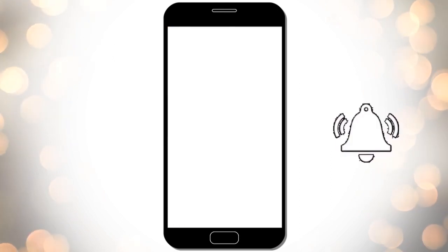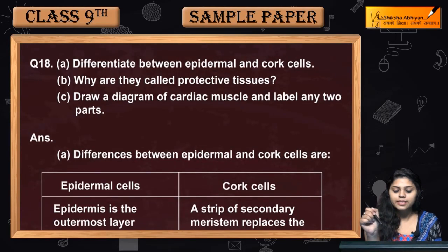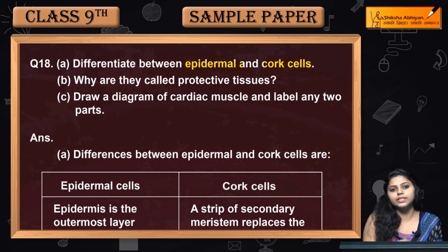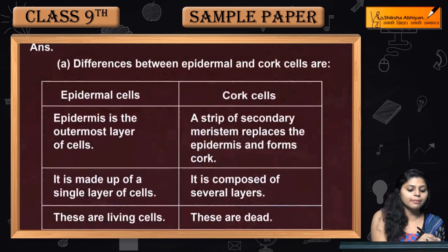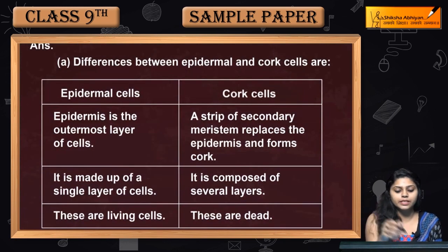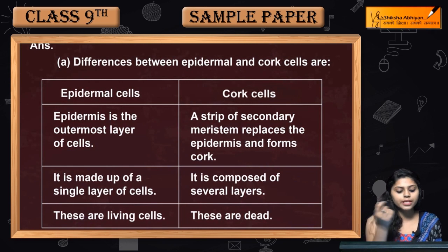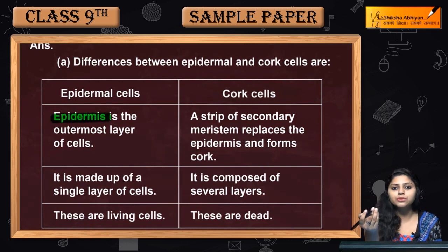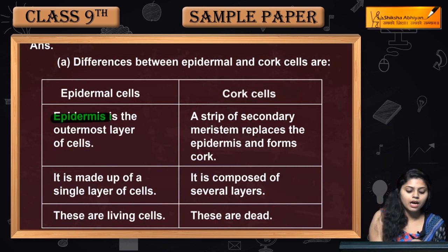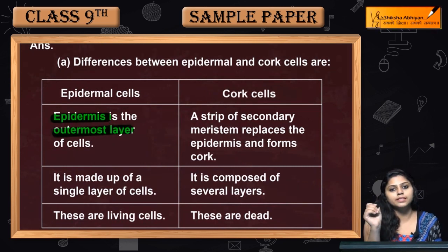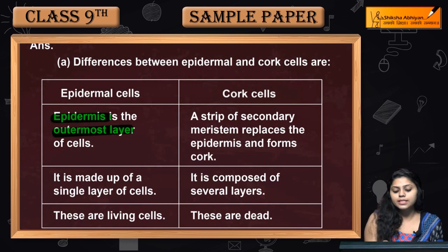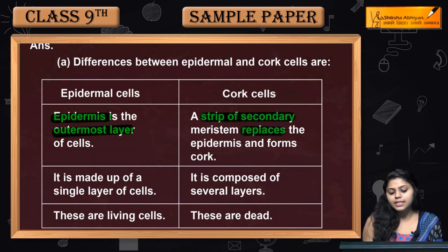Now coming to question number 18 — differentiate between epidermal and cork cells. What are the differences between cork cells and epidermal cells? Epidermal cells are present in the epidermis. Epidermis is the outermost layer of cells. Cork cells are a strip of secondary meristematic stem that replace the epidermis.